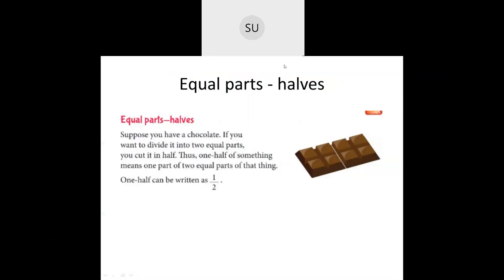Then we saw what are equal parts. If you have a chocolate and you want to divide it among two equal parts — one equal part for you and one for your friend — you will cut it in half, so that both you and your friend get two equal pieces. In the whole chocolate there are eight pieces, so half of eight is four. You divide it such that each of you gets four pieces each.